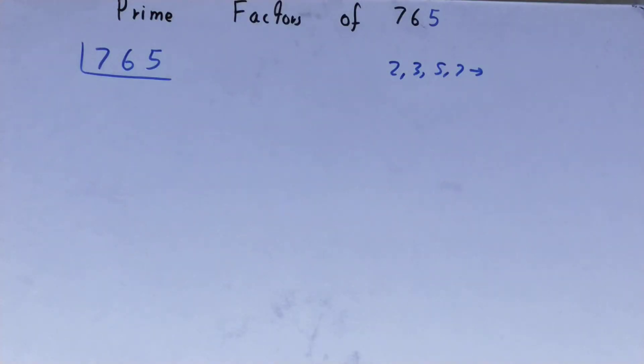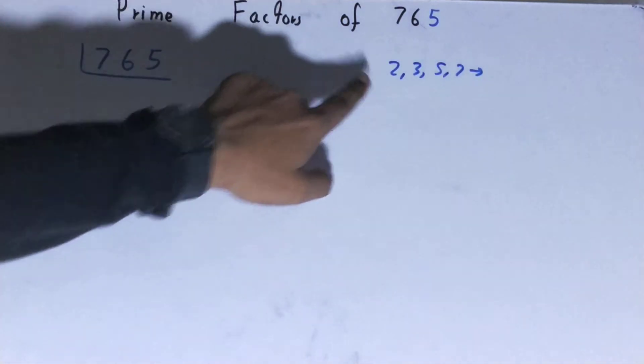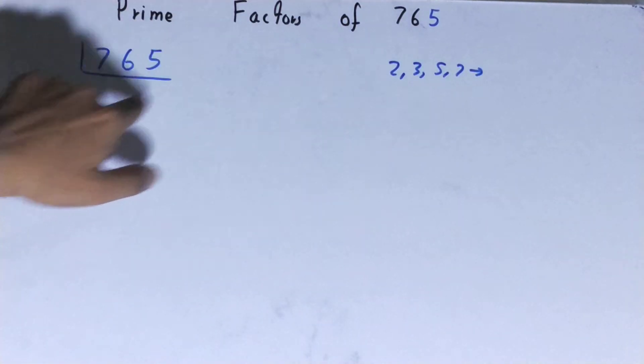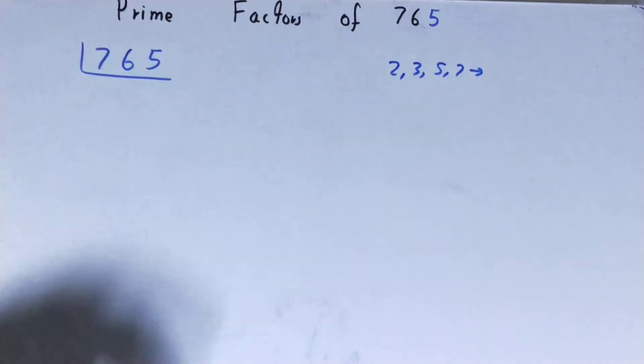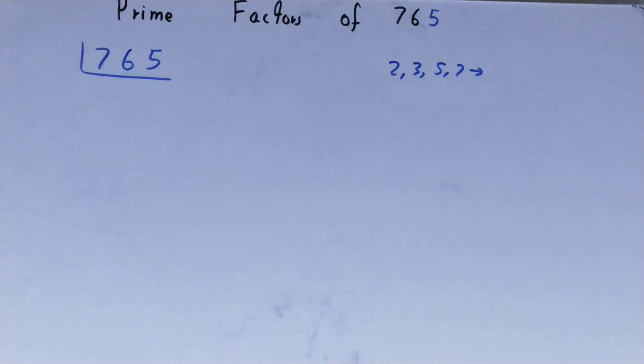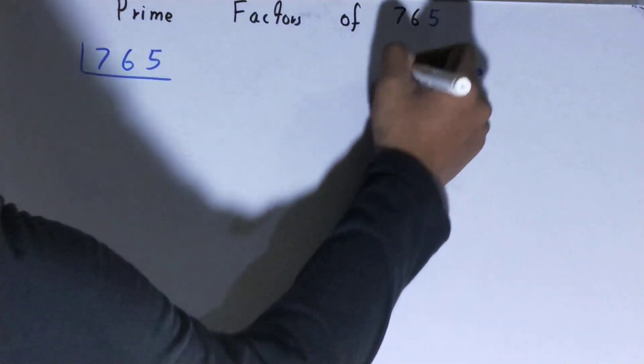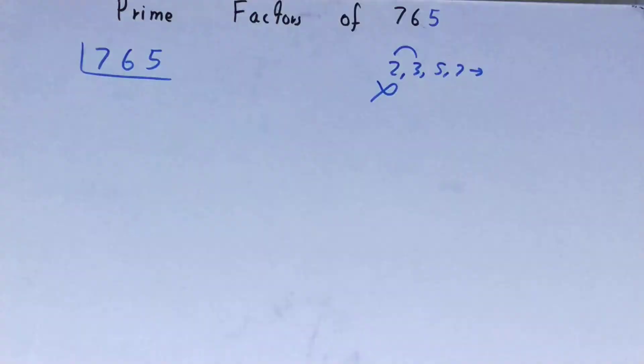We'll start with the lowest prime number we have, which is 2. Is 765 divisible by 2? Clearly not, because 765 is an odd number. So we'll go to the next lowest prime number we have.